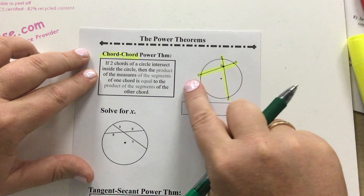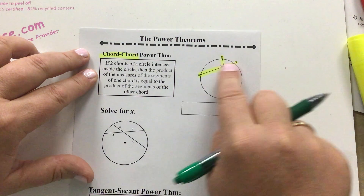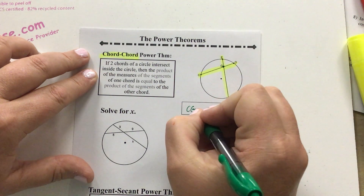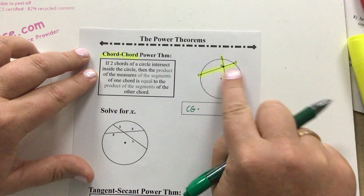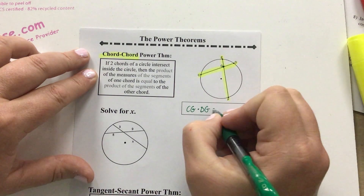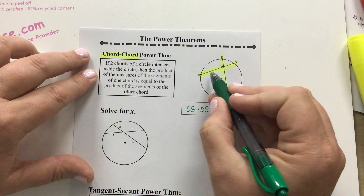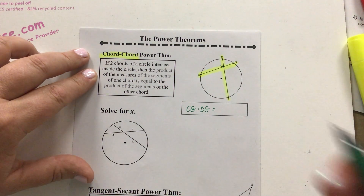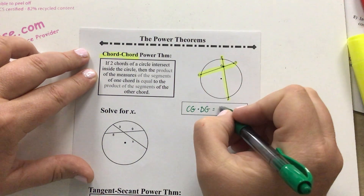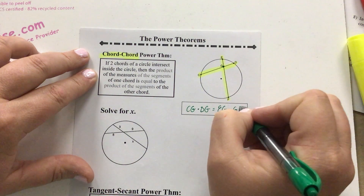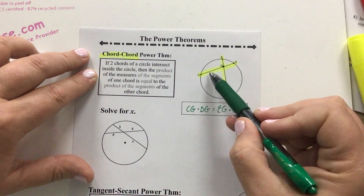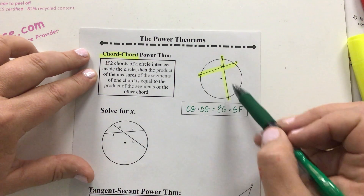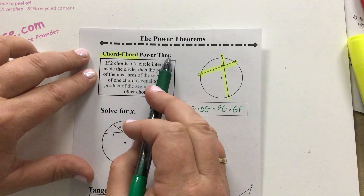So if I look at segment CD first, one part of the chord is segment CG. I take CG times the other part, segment DG, and multiply those two pieces together. That product is equal to the product of the pieces of the other chord: EG times GF. So their products are equal. This is the chord-chord power theorem.